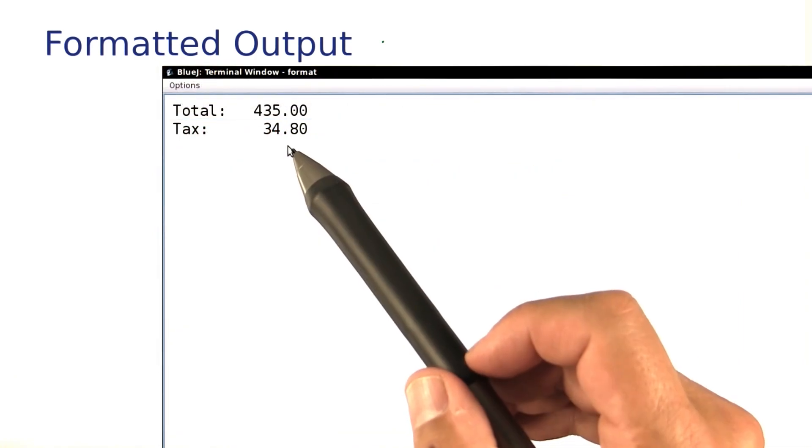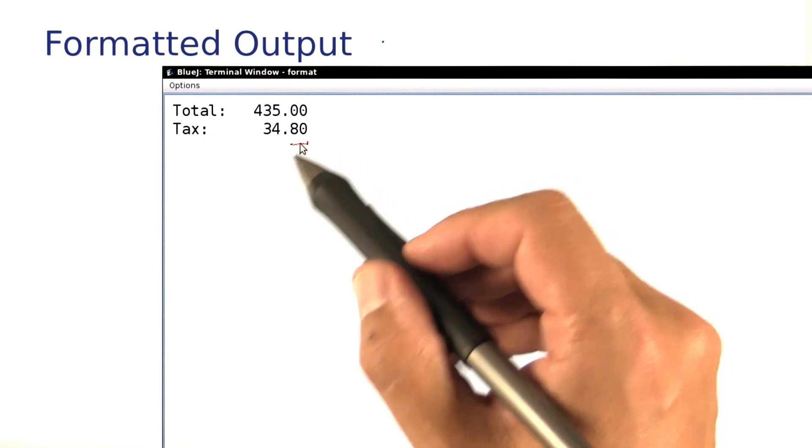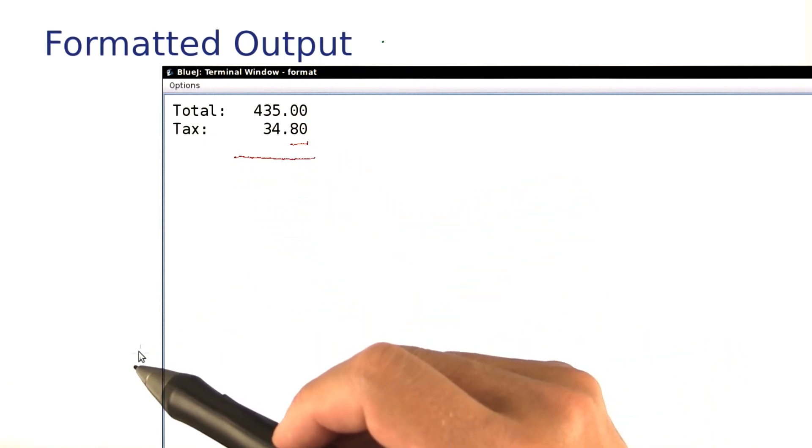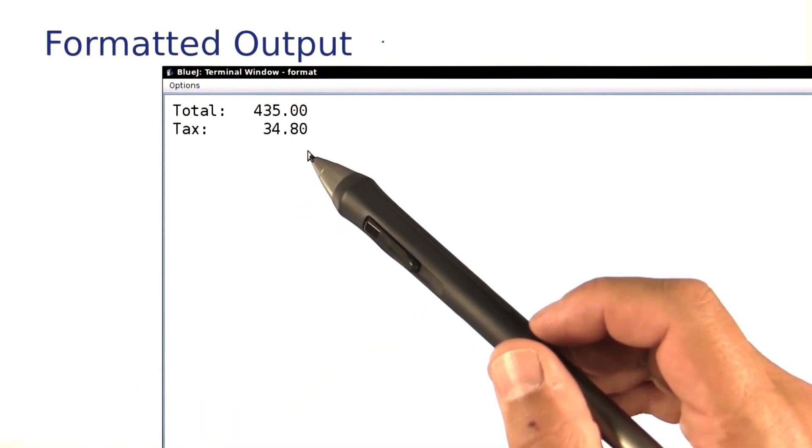Now when we run the program, everything is nice and beautiful. Both numbers have two digits after the decimal point. Both of them occupy 8 characters. As a general rule, whenever you display prices, go ahead and use printf. You'll practice that with Sarah right now.